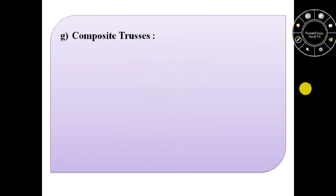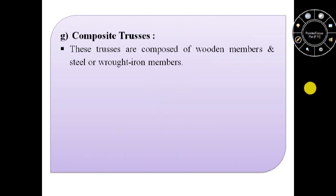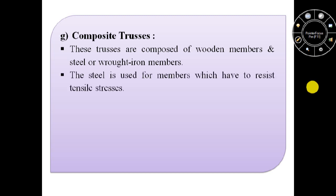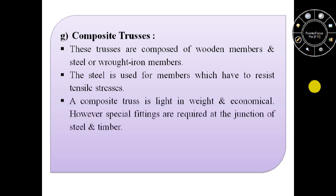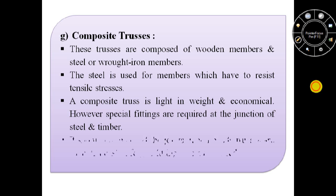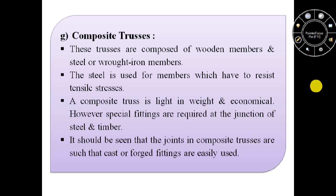Composite trusses are composed of wooden members and steel or wrought iron members. The steel is used for members which have to resist tensile stresses. A composite truss is light in weight and economical. However, special fittings are required at the junction of steel and timber, and the joints in composite trusses should be such that cast or fork fittings are easily used.